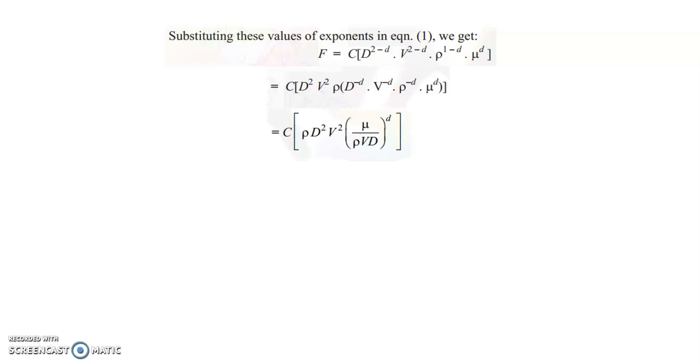Since d^(-d) = 1/d^d, v^(-d) = 1/v^d, and rho^(-d) = 1/rho^d, we club all terms with common power d. The final expression for drag force is: F = phi · rho · d^2 · v^2, where phi is a new constant representing the function of (mu / (rho · v · d)). The power-d terms are absorbed into the new constant phi.